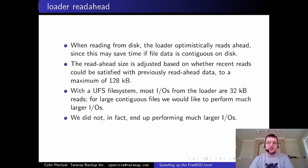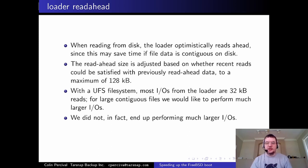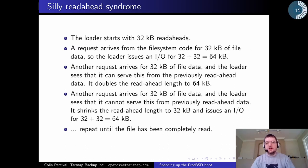While reading from disk, the loader reads ahead optimistically. The readahead size is adjusted automatically: it starts at 32 kilobytes and increases if recent reads were satisfied by readahead data. With UFS, most IOs from the loader are 32 kilobyte reads. For large contiguous files like the kernel, ideally we'd perform much larger IOs. Unfortunately we didn't, due to what I call silly readahead syndrome.